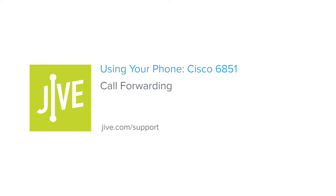I'm going to show you how to enable and disable call forwarding on a Cisco 6851. Call forwarding allows calls made to your line to be forwarded to another internal extension or external number.